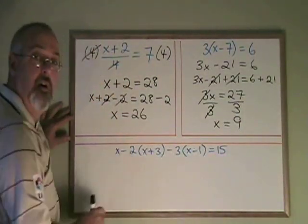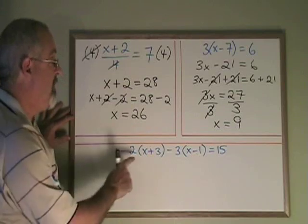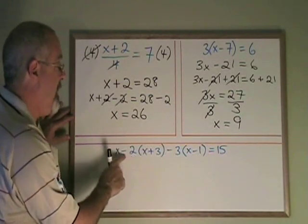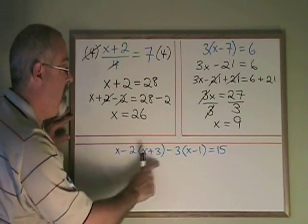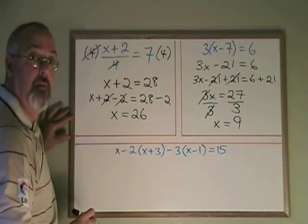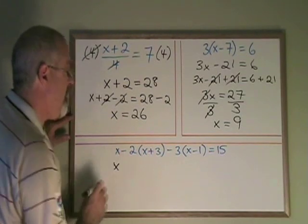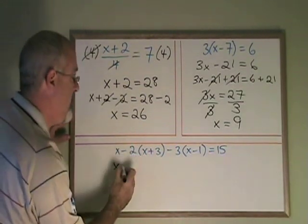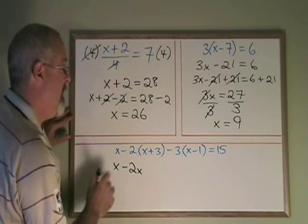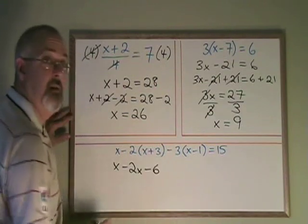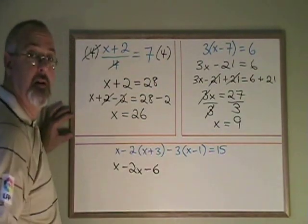Here we have a long complex equation, which has two brackets, each of which are being multiplied, and there's a minus sign before. When you have a minus sign before a multiplication of a bracket, you have to be careful of the signs. Minus 2 times x is minus 2x, and minus 2 times positive 3 is minus 6. It seems like the plus turned into a minus here.